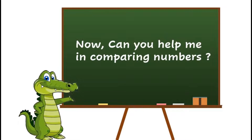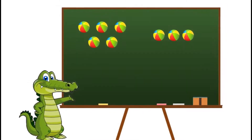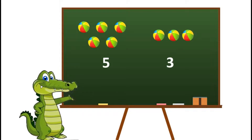Now can you help me in comparing numbers? On one side we have one, two, three, four, five balls and on the right side we have one, two, three balls. Correct! Because five balls are more than three balls, I will open my mouth towards the bigger number five. So five is greater than three.